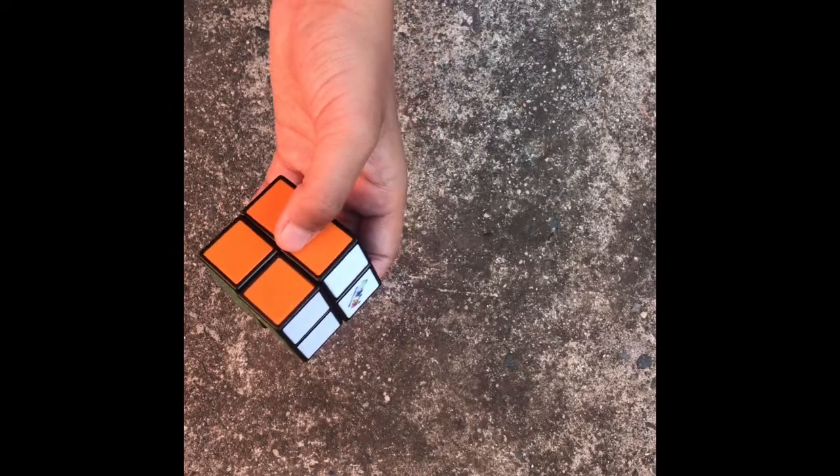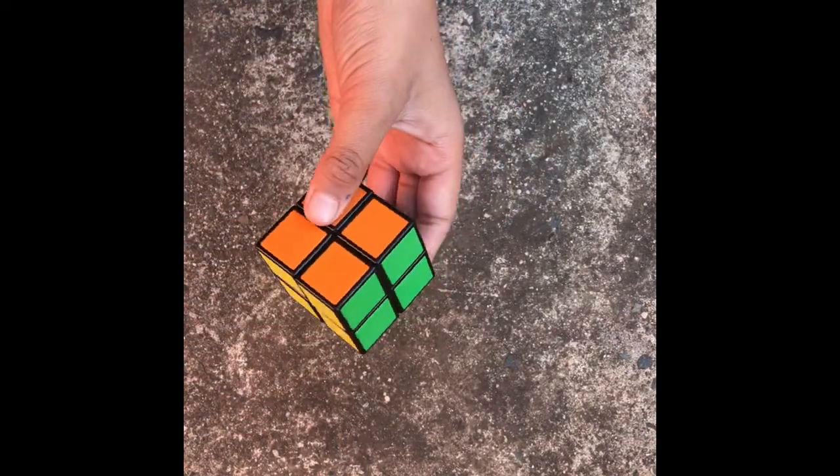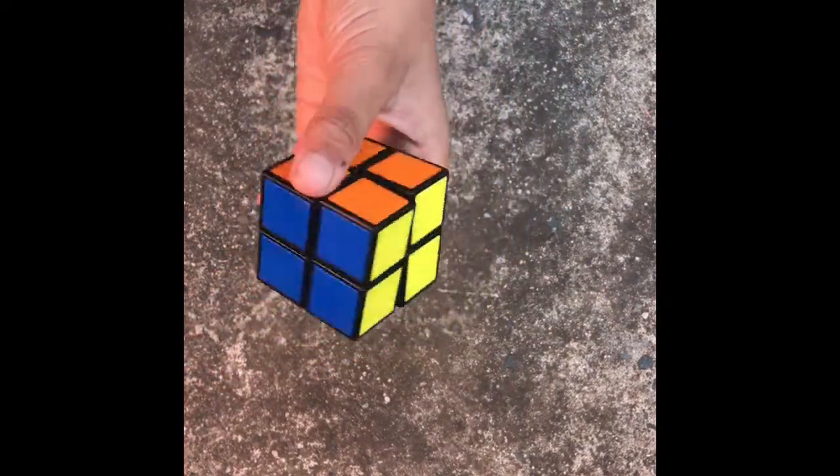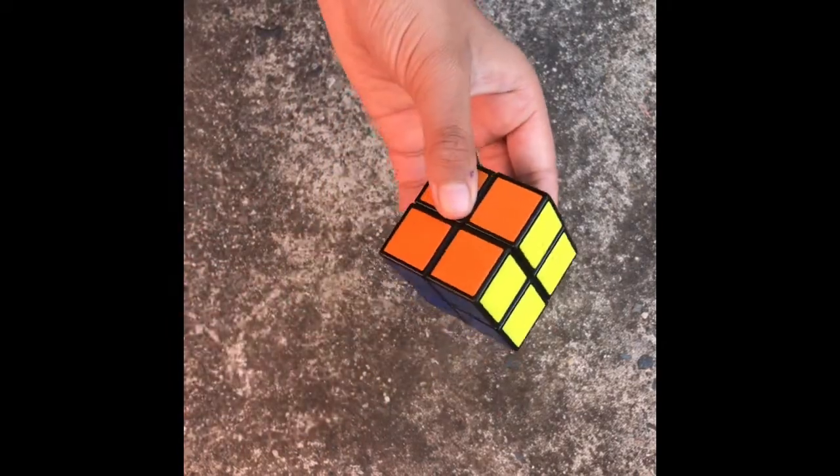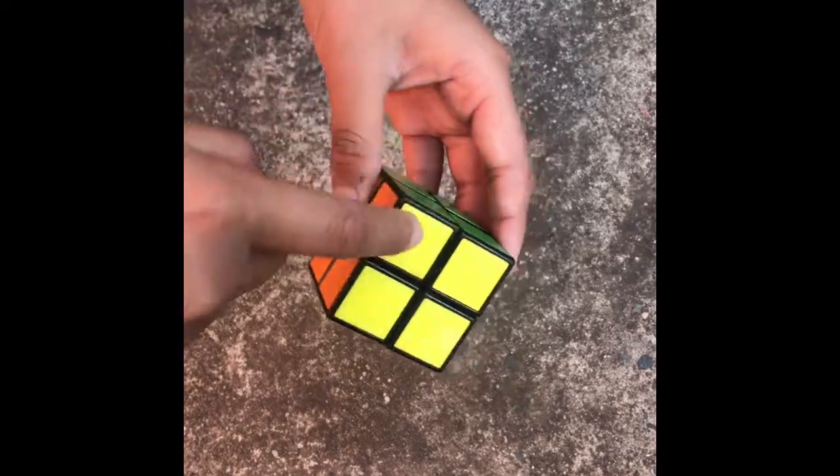So if you use Roux, which is one of the best speedsolving methods, then that is a good reason for using CLL, because in one of the steps in Roux, you solve all the top layer corners. So that's pretty much what you do in here. Yeah, but that step is called CMLL.